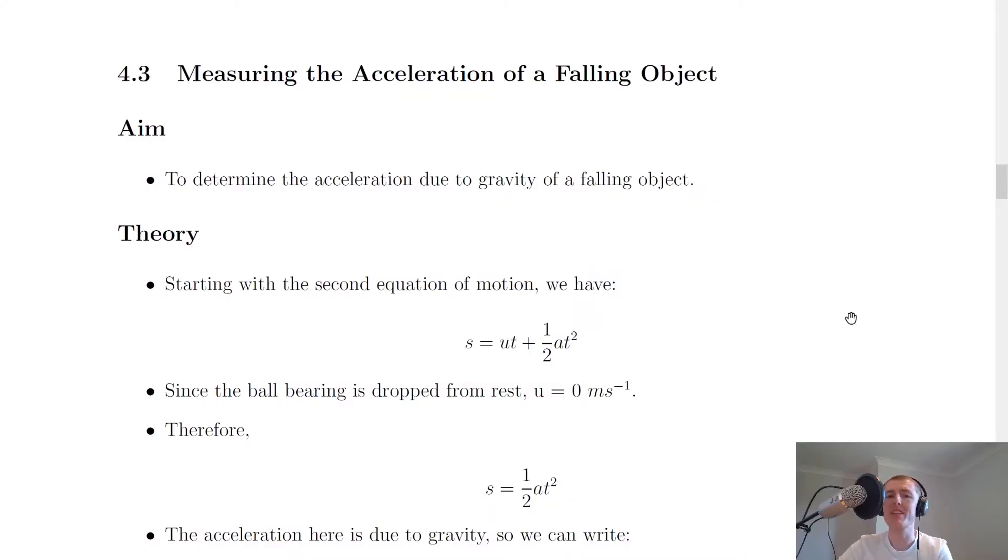Measuring the acceleration of a falling object is another compulsory experiment that the SQA want you to be able to do and to be able to describe for the exam. So just like we did for measuring the acceleration of an object down a slope, we're going to go through a scientific report showing you how to do this experiment. So the aim, theory, method and results and so on.